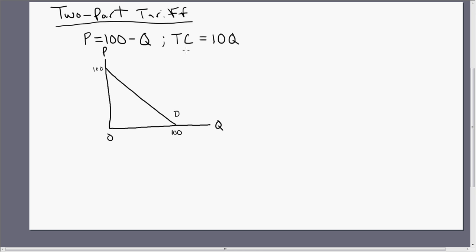The next thing we're going to need is the marginal cost. Marginal cost is going to be the derivative of this firm's total cost equation or 10. So marginal cost is constant at $10 here.